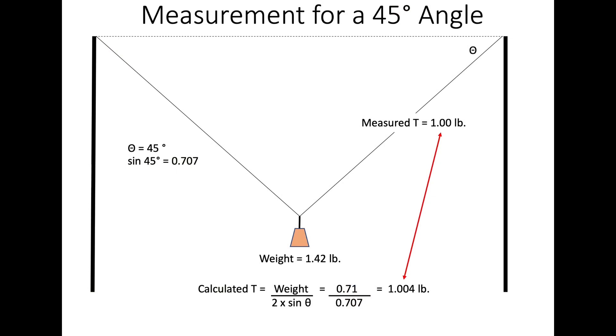Okay, this one we had our angle was steeper. It was 45 degrees. The sine of 45 degrees, 0.707. Weight was the same, 1.42. So we divide half the weight by the sine of the 45. We have 1.004. Too many decimal points, but I'd say that's pretty much the same thing. So we'll live with that.